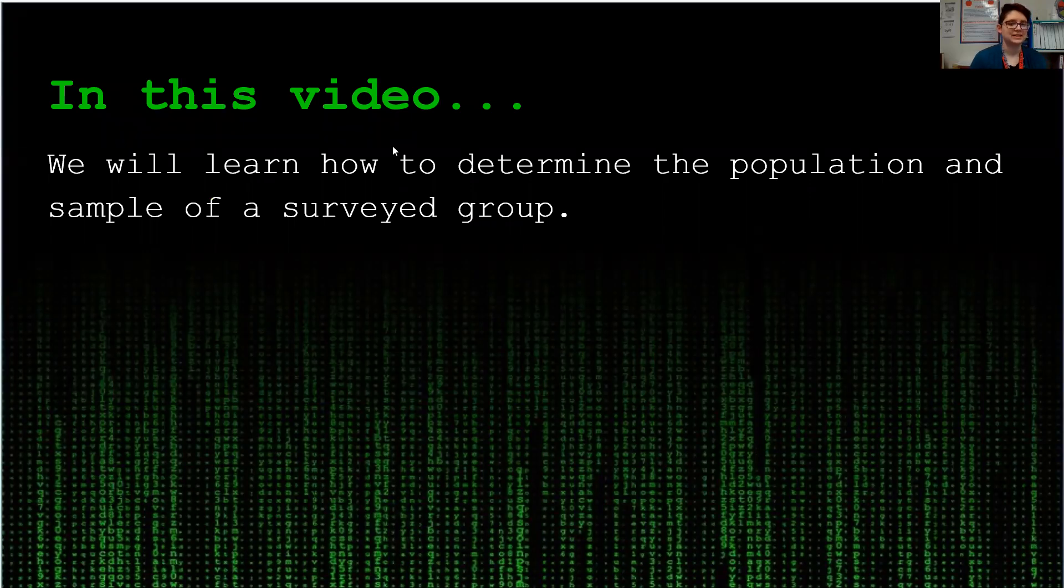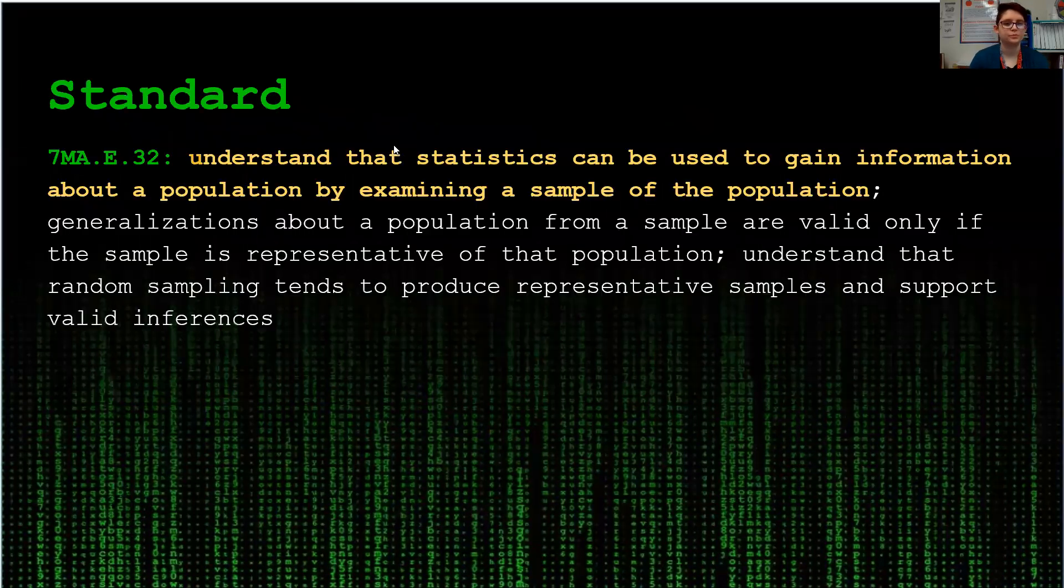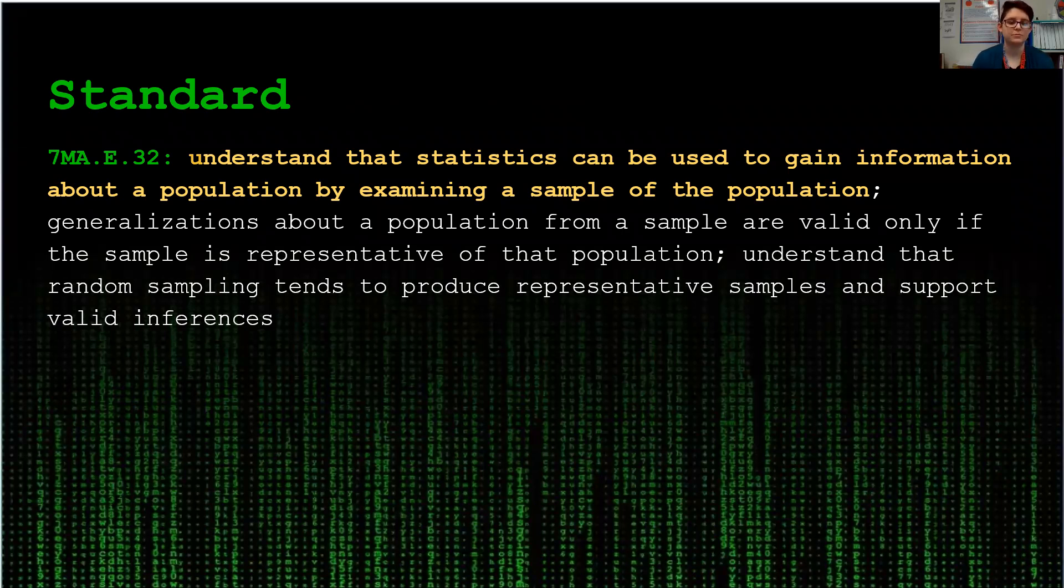In this video, we will learn how to determine the population and sample of a survey group. We are looking at Standard 7 MA E32. Understand that statistics can be used to gain information about a population by examining a sample of the population.